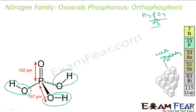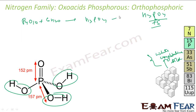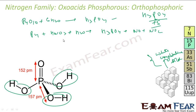Phosphoric acid is used as a food additive, in dental products, fertilizers, and home cleaning products. To prepare it, you can react P4O10 with water to get H3PO4. Alternatively, react phosphorus with nitric acid in presence of water to get H3PO4 along with NO and NO2. The balanced equation uses coefficients 10, 4, and 5.